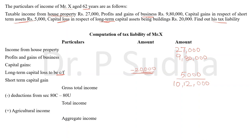After calculating gross total income, we have to deduct deductions from sections 80C to 80U. In this question we don't have any deductions, so a dash is put in the outer column and the same answer is brought down — 10,12,000. This answer is called total income. There is no agricultural income in this question, so we do not need to calculate aggregate income and can proceed with total income directly.